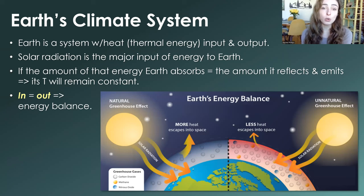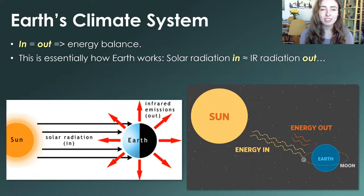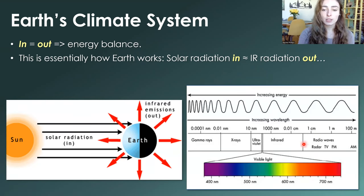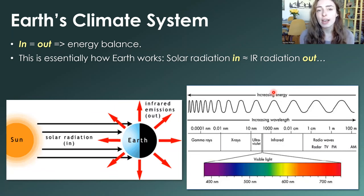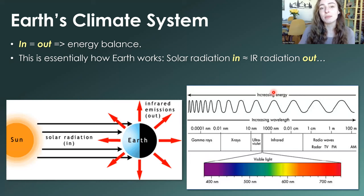If the amount of energy that Earth absorbs from solar radiation equals the amount of energy it reflects and emits, then its temperature would remain constant. In other words, if the in equals the out, the energy is balanced. Solar radiation is the input of energy to Earth, and IR radiation is the output of energy that Earth emits after it heats up. Earth absorbs UV and visible light from solar radiation and then emits infrared light. Everything that has heat on Earth emits infrared light — we emit infrared light, which is why thermal cameras show us as red compared to our cooler surroundings.